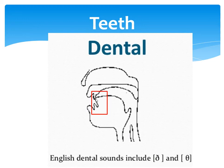If we move the tip of the tongue against the upper set of teeth, we can produce a sound like /th/. We can also put the tip of the tongue between the upper teeth and the lower teeth and produce a sound like /th/.